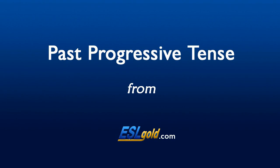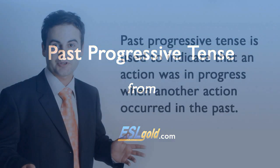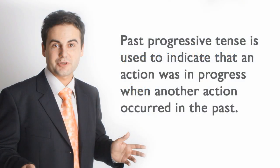Past progressive tense is used to indicate that an action was in progress when another action occurred in the past.